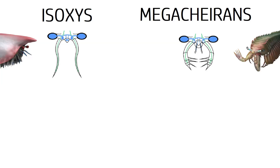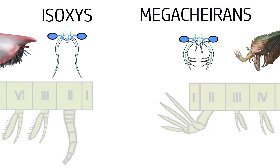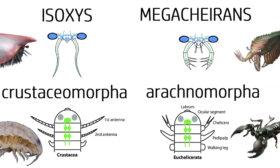This first appendage on both crustaceomorphas and arachnomorphas is associated with the second segment of the body. That second segment in both is connected to a part of the brain called the deutocerebrum. In modern crustaceomorphas, the deutocerebrum is connected to the antennules, and in modern arachnomorphas, the deutocerebrum is connected to the chelicerae.